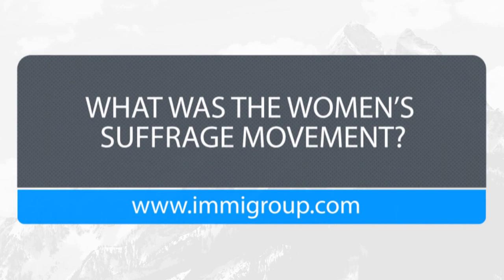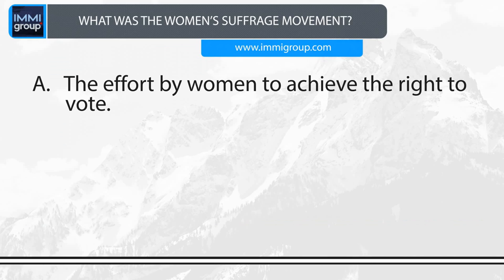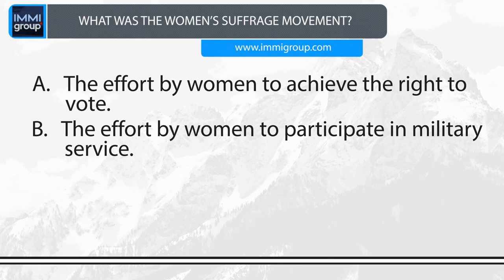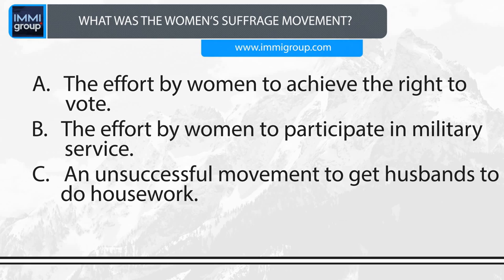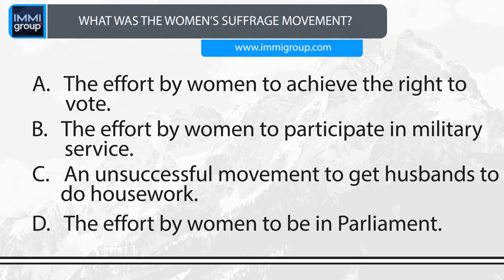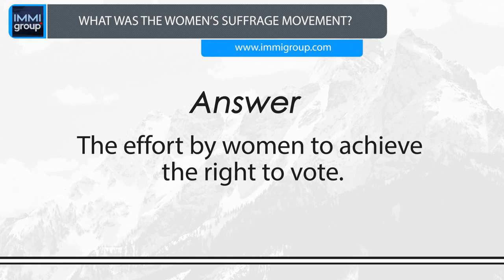What was the women's suffrage movement? A. The effort by women to achieve the right to vote. B. The effort by women to participate in military service. C. An unsuccessful movement to get husbands to do housework. D. The effort by women to be in Parliament. Answer: The effort by women to achieve the right to vote.